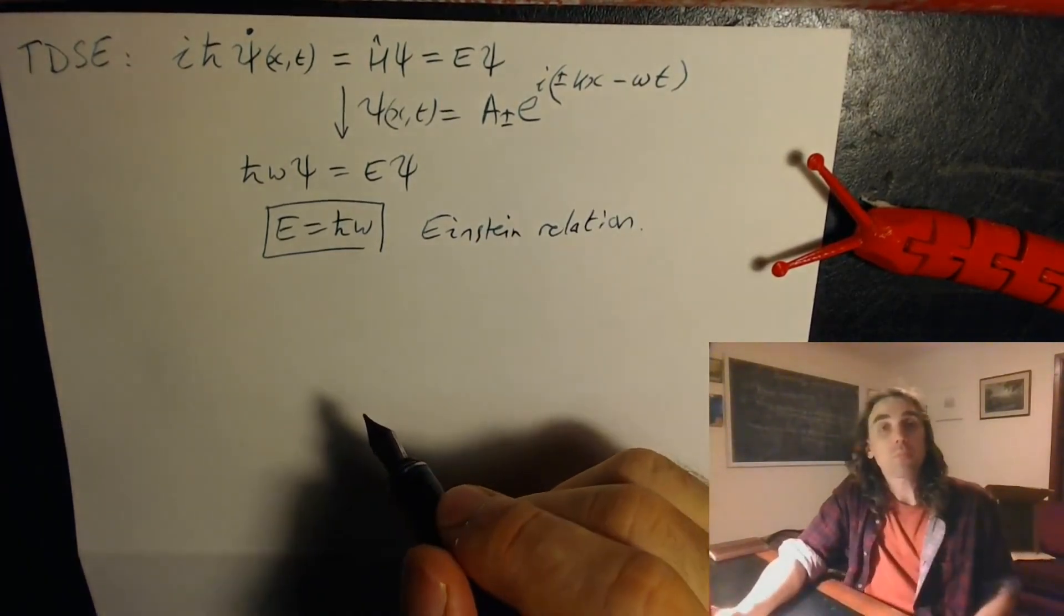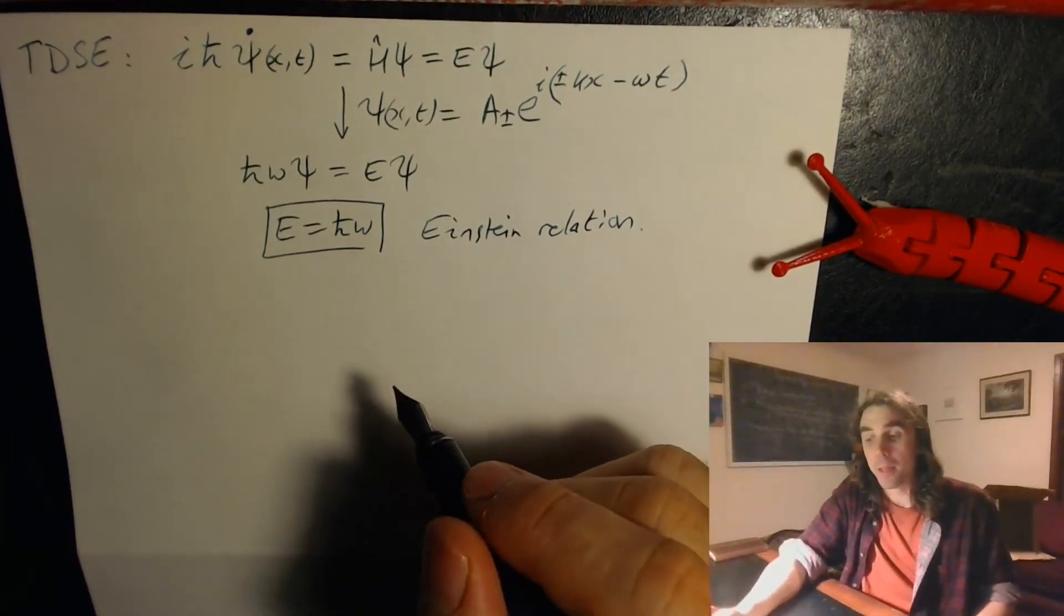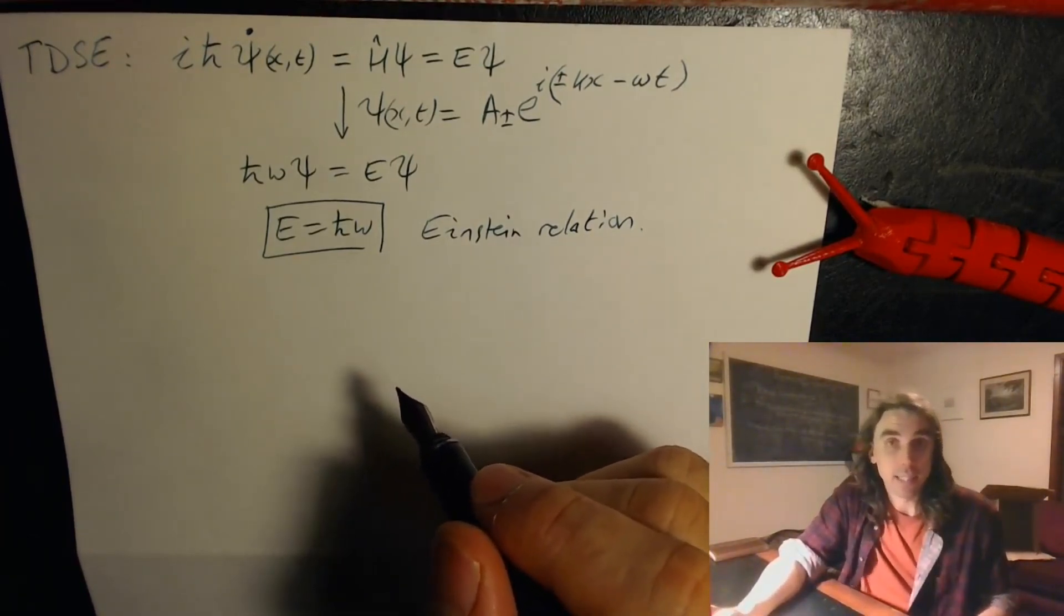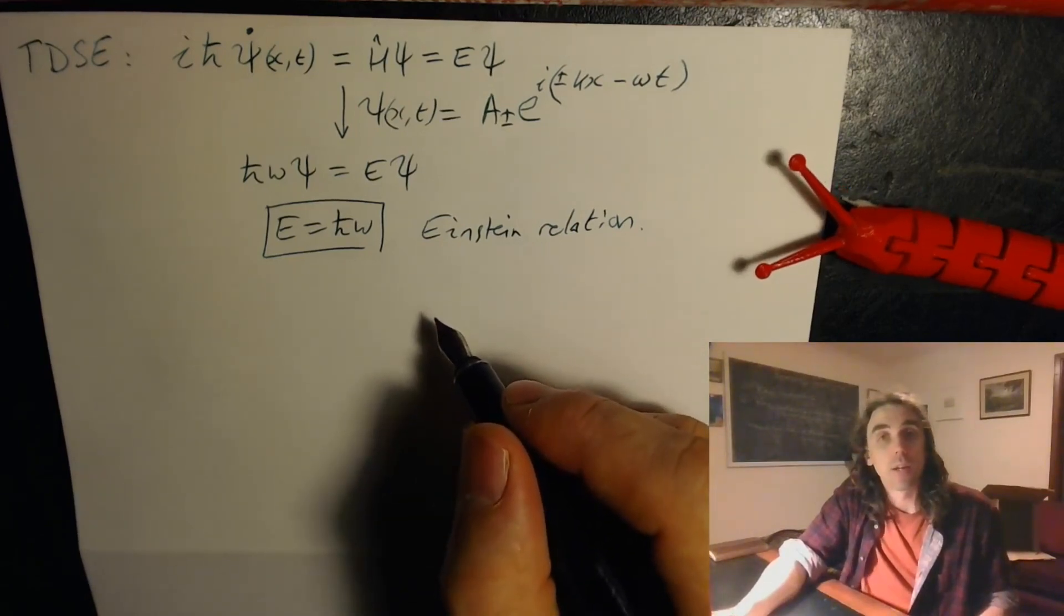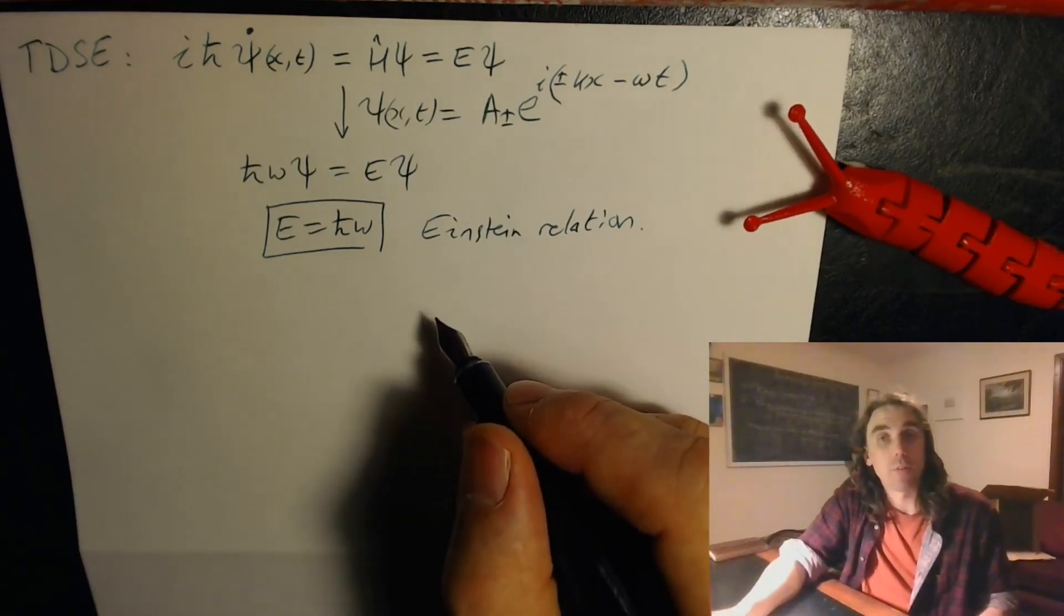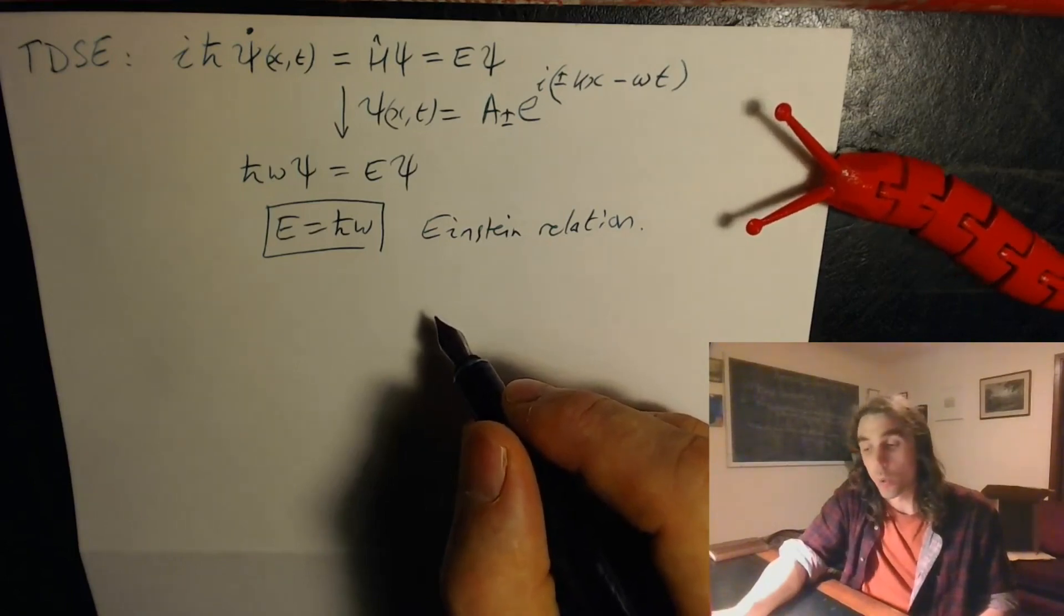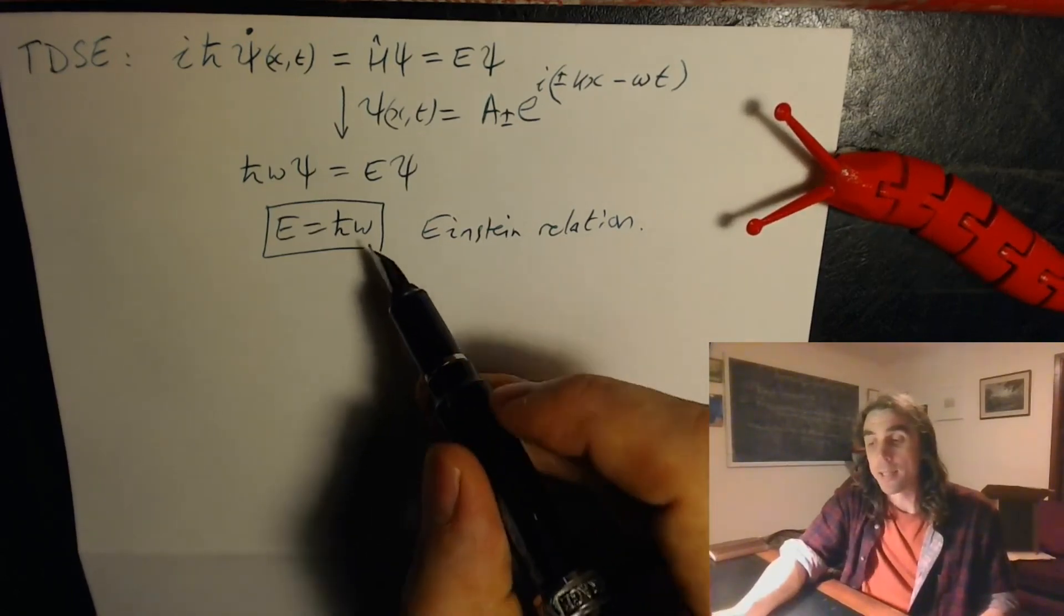Recall Einstein said take light which is classically described by a wave, and we can say that another way to think of that is that it's made up of individual packets of energy called quanta or photons. If a photon has angular frequency omega it has energy e.